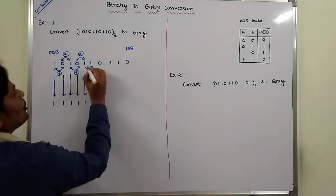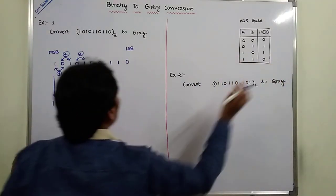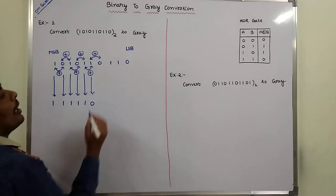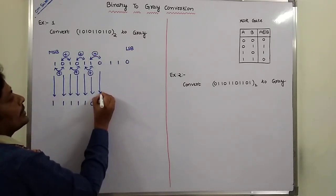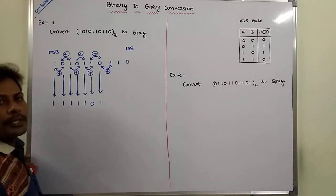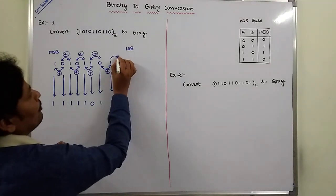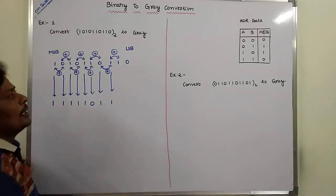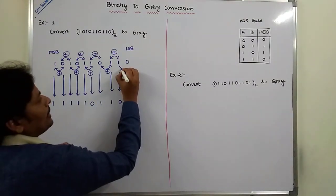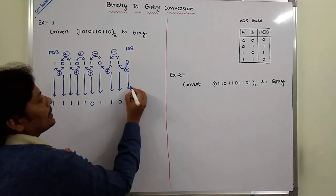Next, between these two bits we perform the exclusive OR operation. Both inputs are same, so the output is 0. Next pair: both bits are different, output is 1. Next pair: both bits are different, output is 1. Next pair: both bits are same, output is 0. Next pair: both bits are different, output is 1.